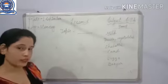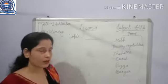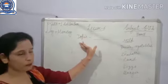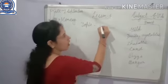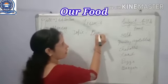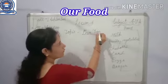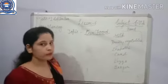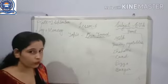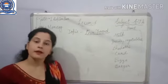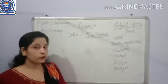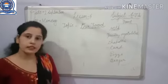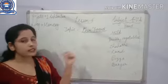These items are included in the category of food, so students, our today's topic is based on food. Topic name is food. Food is one of our basic needs. Without food, we can't live. It is our basic need. There are three basic needs: food, home, and clothes — roti, kapda aur makan.